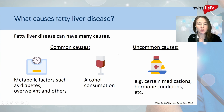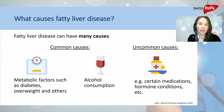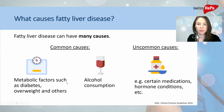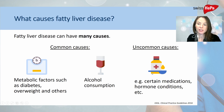Fatty liver disease has many different causes. Among the common causes are metabolic factors such as type 2 diabetes, overweight, and other components of the so-called metabolic syndrome, such as hypertension and elevated blood lipids. Other common causes include alcohol consumption, and there are more and less common causes such as certain medications, hormonal conditions, and genetic diseases.